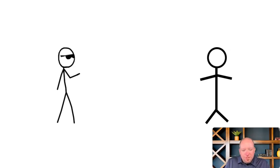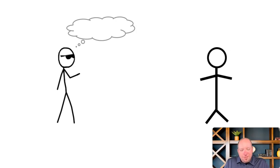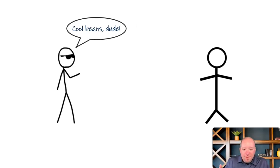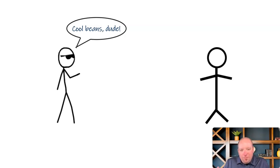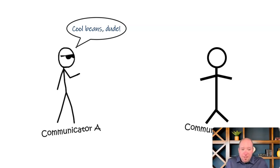So you have one person walking down the street doing their thing, and they run across another person. They think to themselves, 'What is that person doing?' They see that person doing something cool and say, 'I should tell them.' So they say, 'Cool beans, dude. That's really cool what you're doing there.' And so we've established the first two elements of the communication process: communicator A and communicator B. We don't call them sender or receiver anymore because both people are senders and receivers. There's one person on one side and one person on the other.